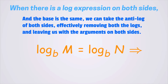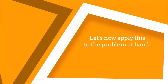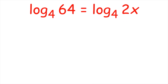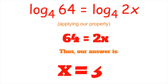Let's say we have log base b of m is equal to log base b of n. If we take the anti-log of both sides, the logs would cancel out and we would just be left with m is equal to n. Once again, b and m must be greater than 0 and b cannot equal 1. Our original problem was log base 4 of 64 is equal to log base 4 of 2x. We can take the arguments and set them equal: 64 is equal to 2x, which gives us x is equal to 32.